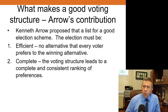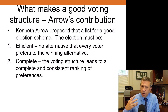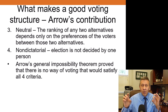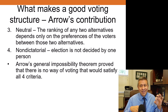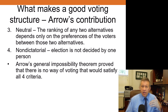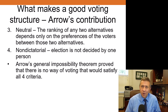Ken Arrow came up with four rules for a good election scheme. First, it should be efficient — no alternative should exist that every voter would prefer to the winning alternative. Second, it should be complete — the voting structure leads to a complete and consistent ranking of preferences. Third, it should be neutral — irrelevant alternatives should not influence the outcome. Fourth, it should be non-dictatorial — one person can't decide the election. Arrow famously proved in a paper the impossibility theorem: there is no voting scheme that satisfies all four criteria when you have multiple candidates.